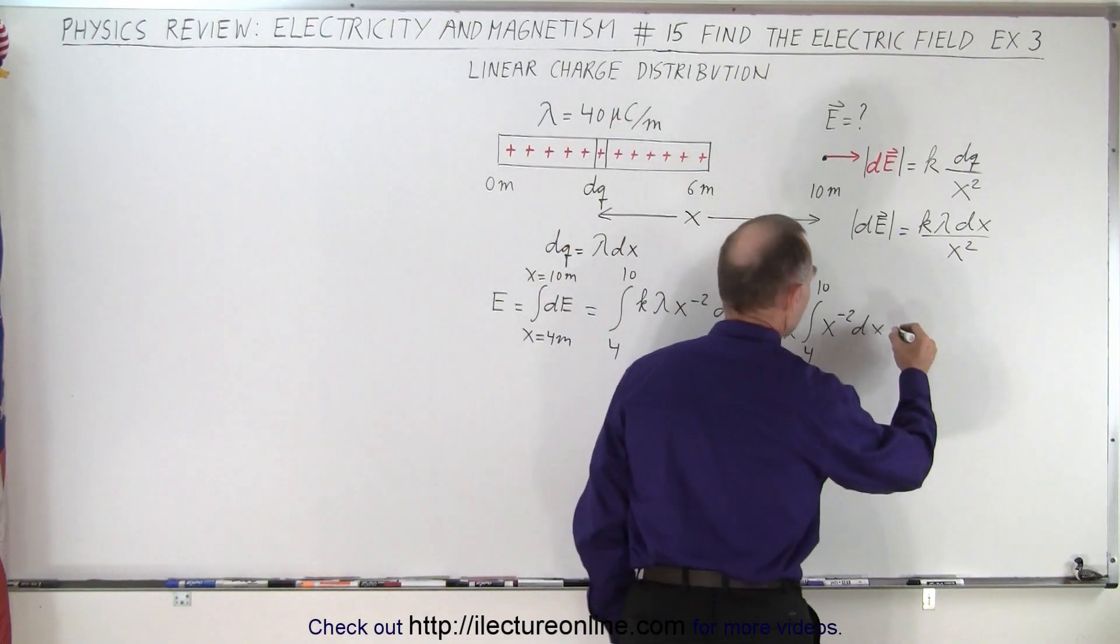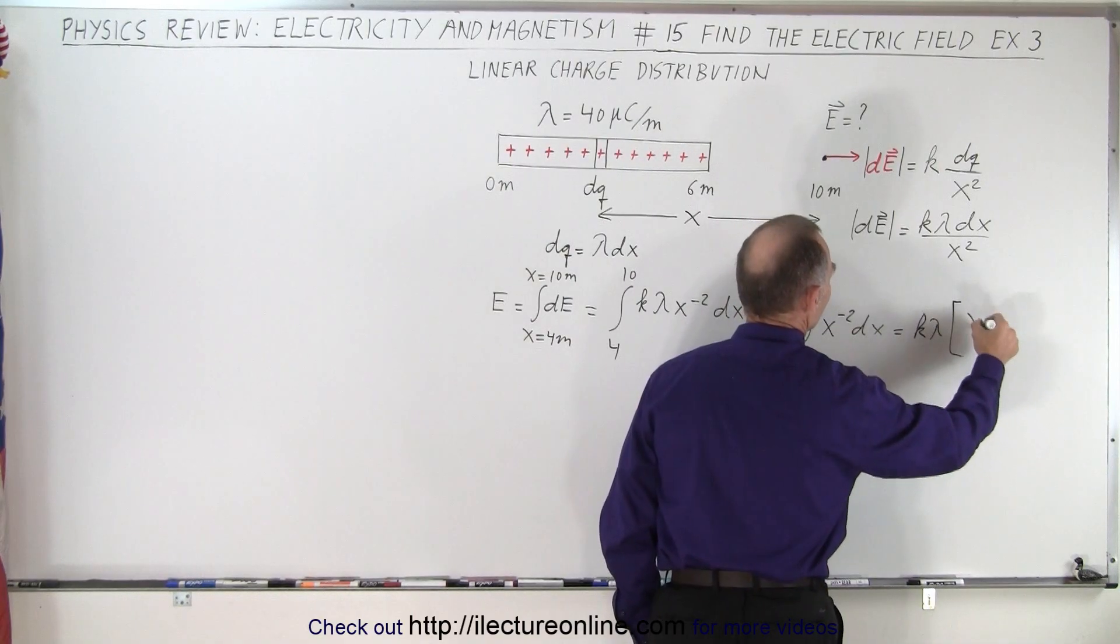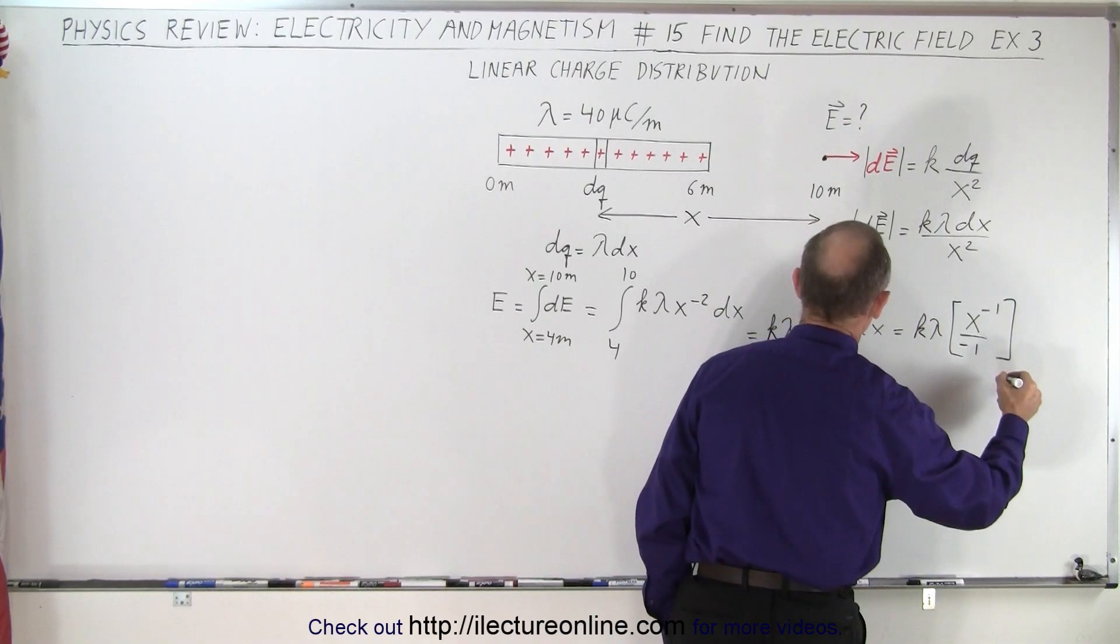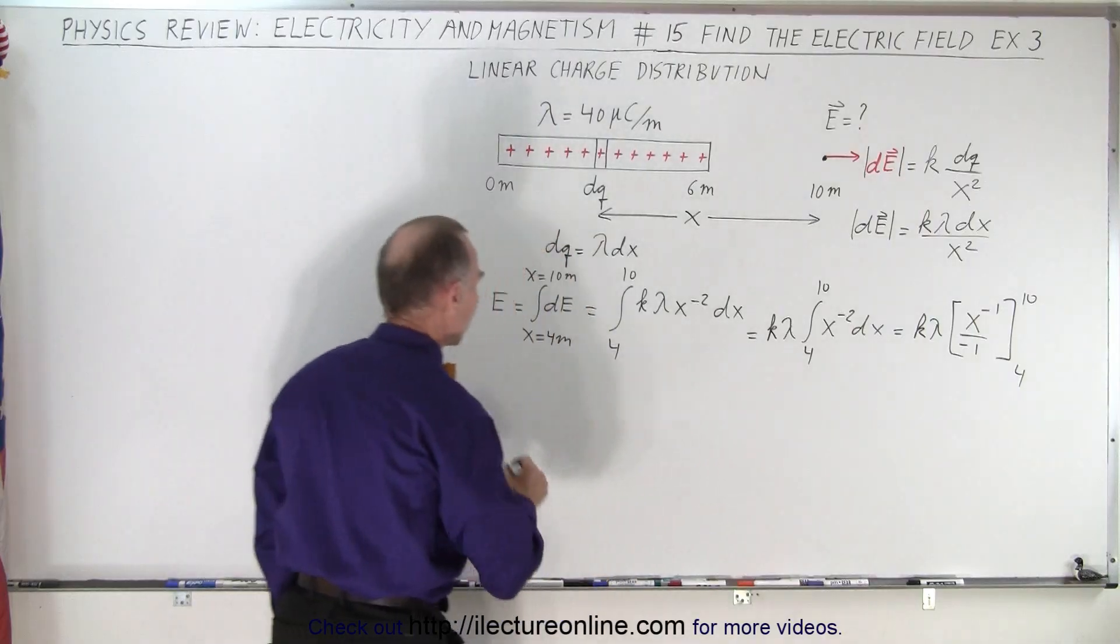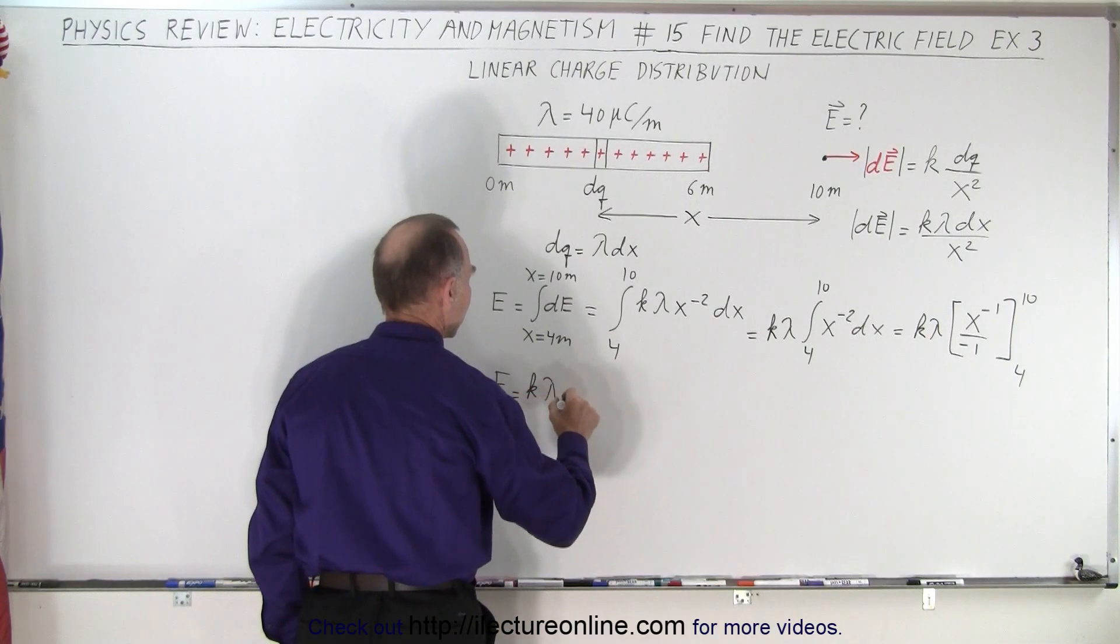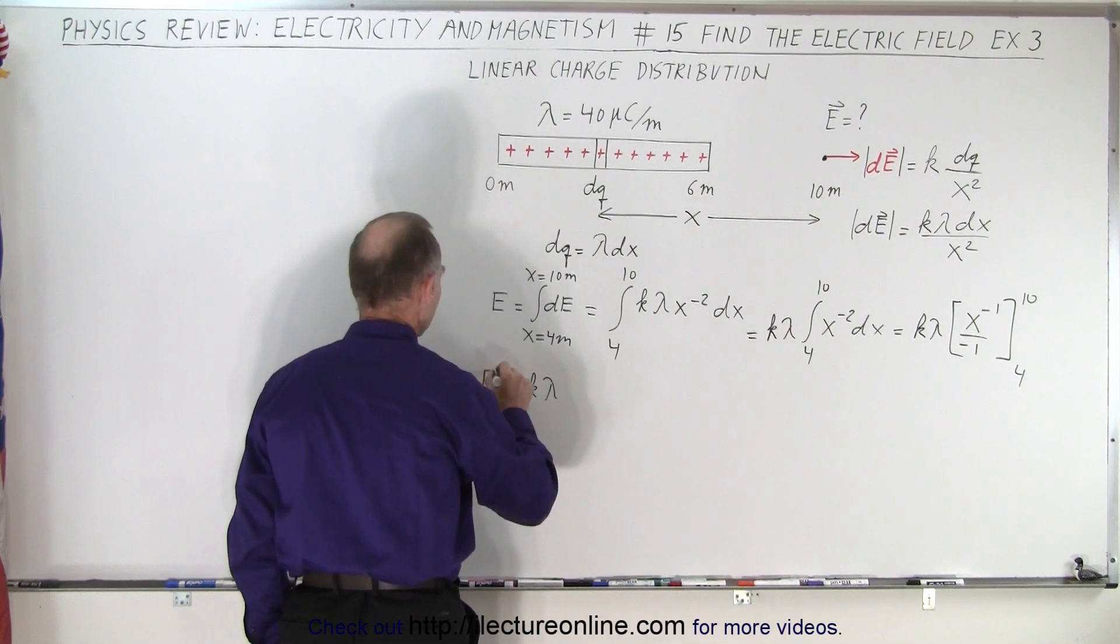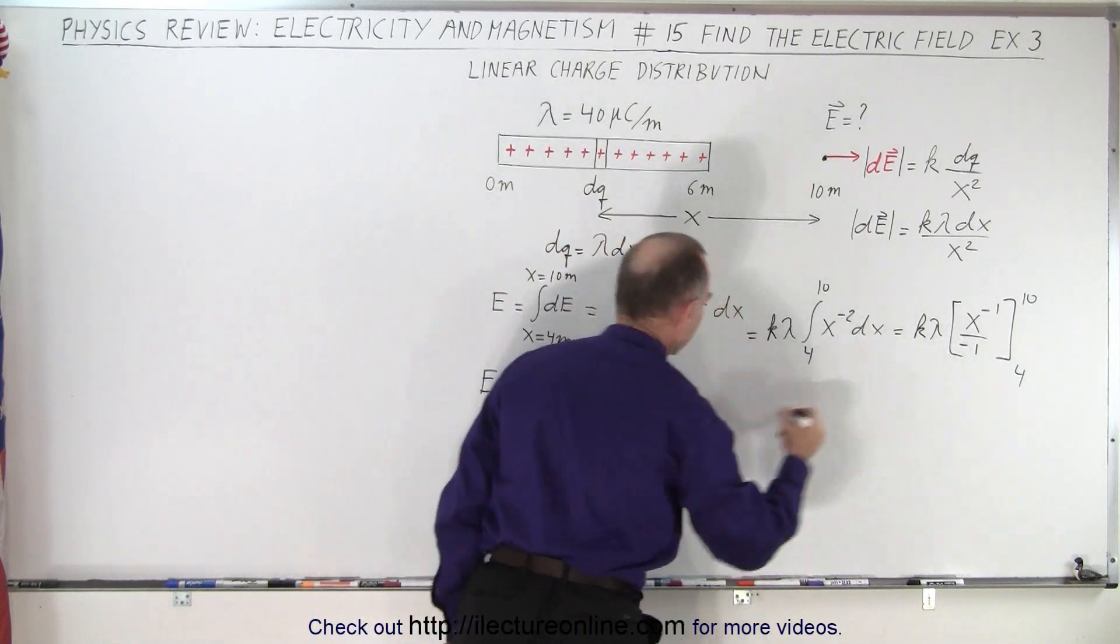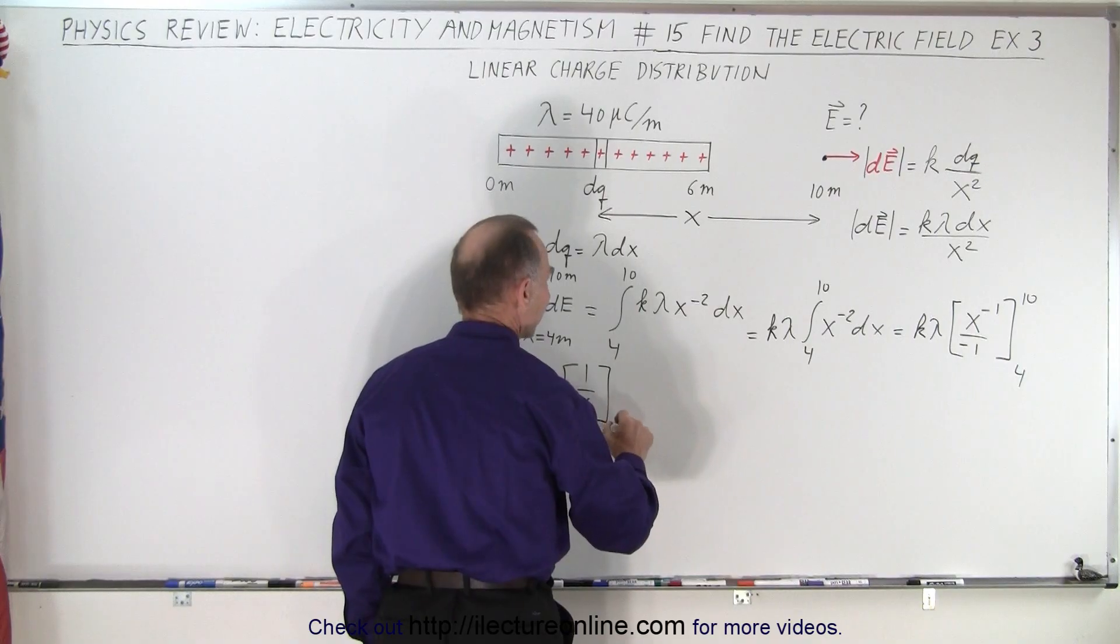So that means that this is going to be equal to k times lambda times x to the minus 1. We add 1 to the exponent, divide by the new exponent, and we're going to evaluate that from 4 to 10. So that means that E is equal to k times lambda. We could put a negative sign in front of that so let's do that. So E is equal to negative k lambda, that's the negative one right here, times 1 over x evaluated from 4 to 10.